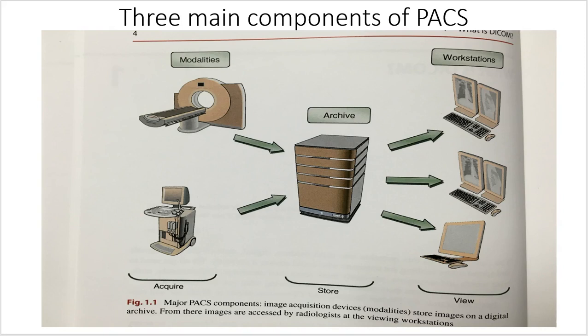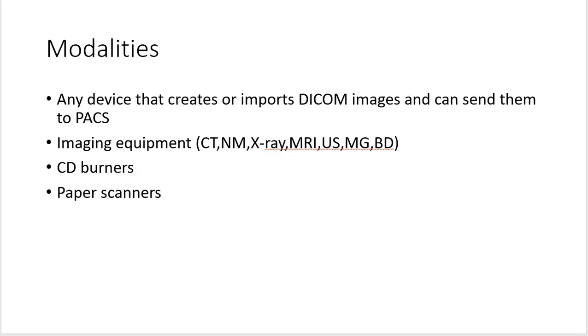The archive is where the images are stored — kind of in the same way that you store food in a refrigerator, we store images in a big archive. The third main component of PACS is the workstations, where technologists, physicians, ER doctors — everybody — looks at the images. They come out of the archive and are displayed on computer monitors. So the three main components are modalities, archive, and workstations.